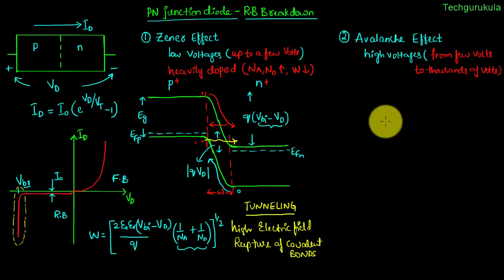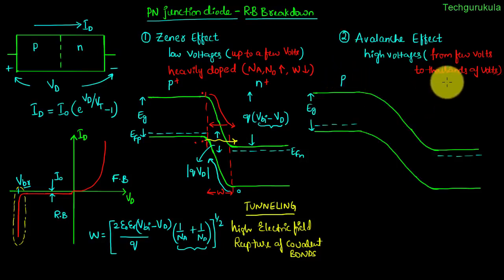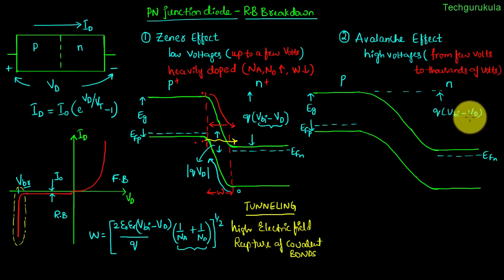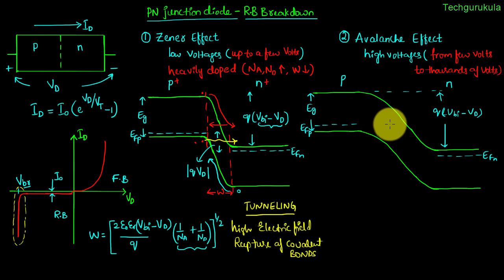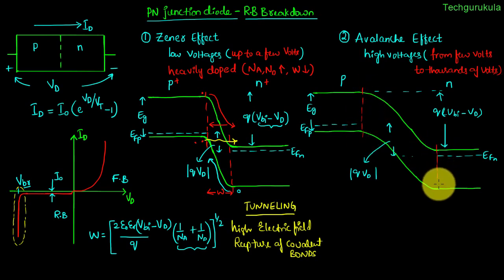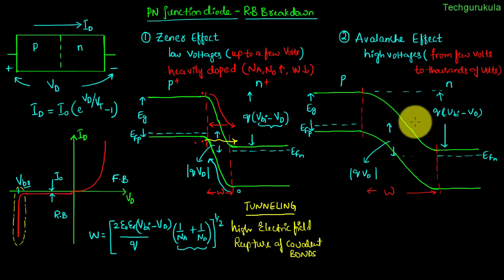Let me draw the energy band diagram for a lightly doped P-N junction where the depletion width is large under reverse bias. This is the p-side and the n-side, with the Fermi energy levels E_Fn and E_Fp shown. The total band bending is q·(V_bi − V_D), and since V_D is negative in reverse bias, V_bi − V_D is greater than V_bi. The separation between the two Fermi levels equals q·|V_D|. The depletion width is pretty large, so the tunneling phenomenon is negligible, and the electric field is directed from n-side to p-side inside the depletion region.